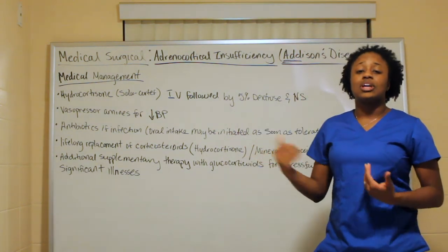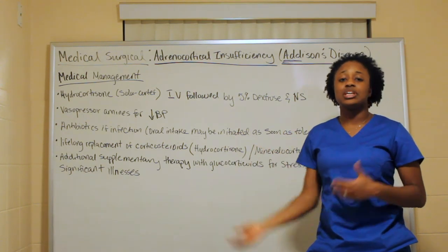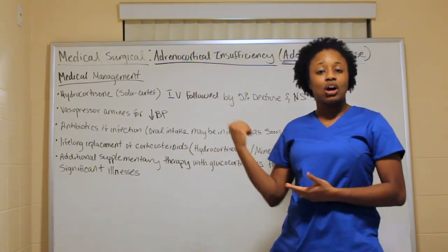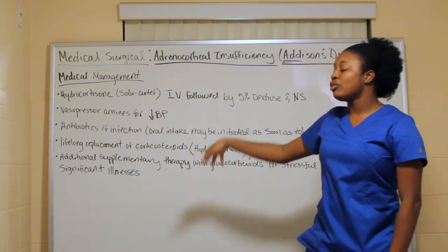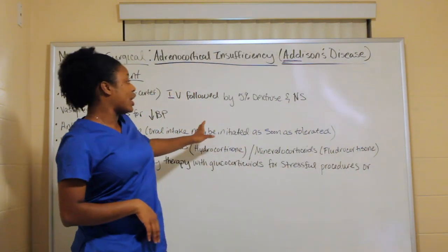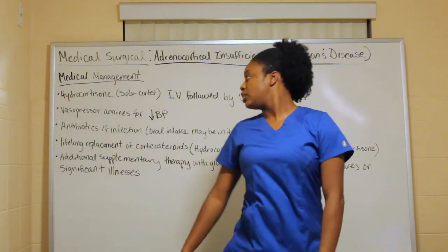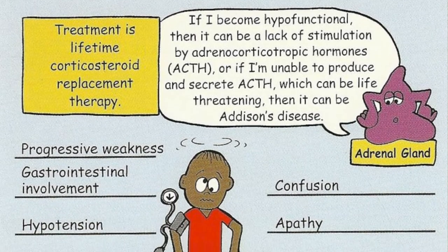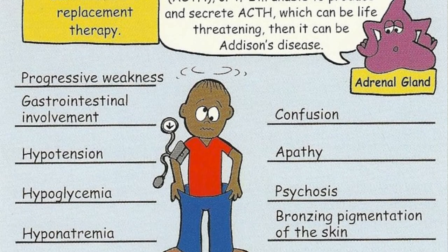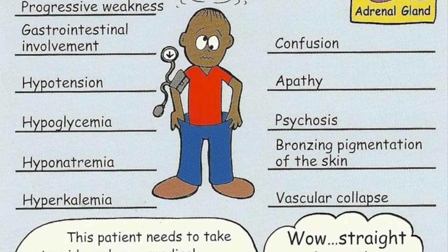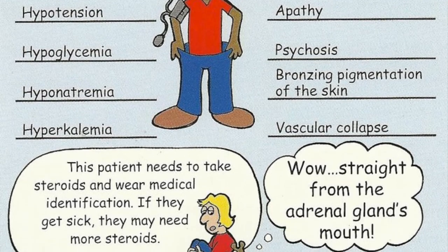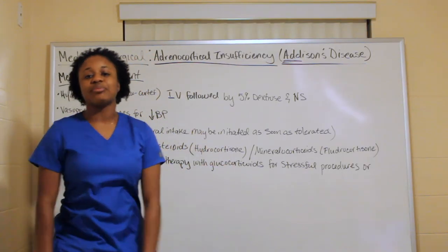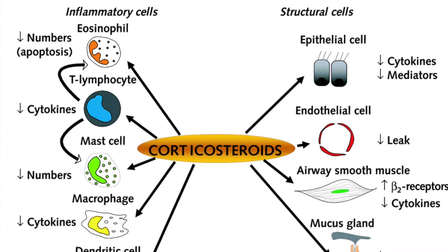Antibiotics are given if the cause is infection — such as TB or histoplasmosis. Oral intake should be initiated as soon as possible. A key treatment is lifelong replacement of corticosteroids, because the body cannot make the steroids it needs throughout the day, so artificial corticosteroids are required.